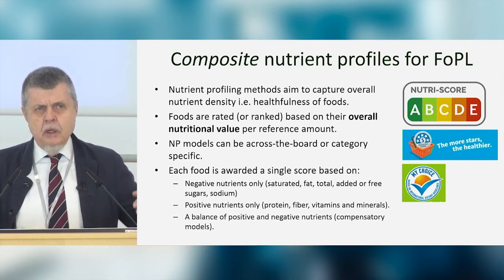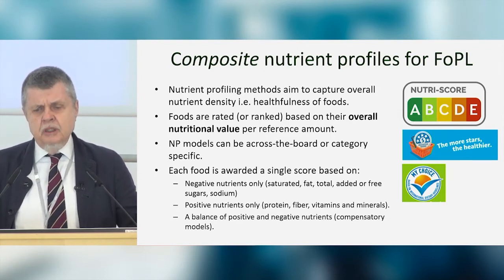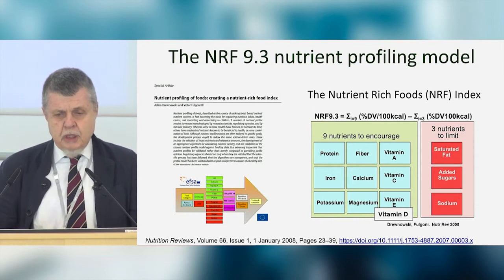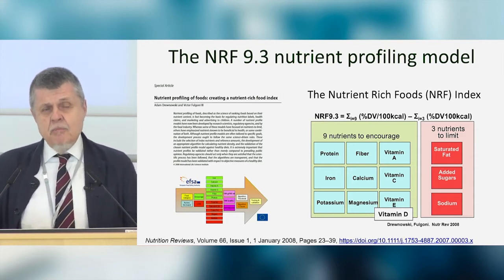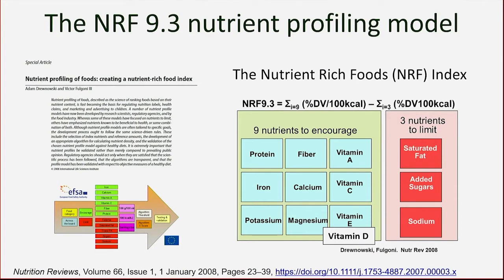You have models based on problematic nutrients or nutrients of concern, models based on positive nutrients like protein, fiber, vitamins, and minerals, or most often some combination. This is a model I developed, published in 2008, now in the public domain. It is a compensatory model based on nine nutrients to encourage — protein, fiber, vitamins, and minerals — and nutrients to limit: saturated fat, added sugar, and sodium. The algorithm is simple: percent daily values for nutrients to encourage minus the sum of nutrients to limit.